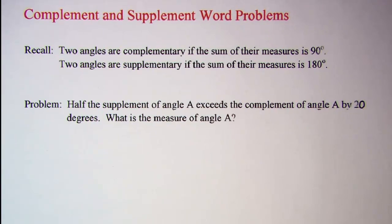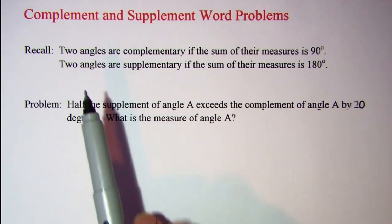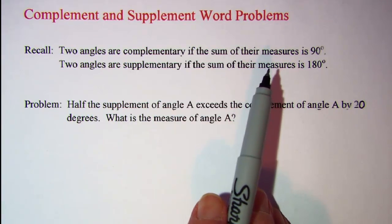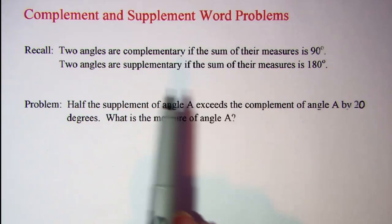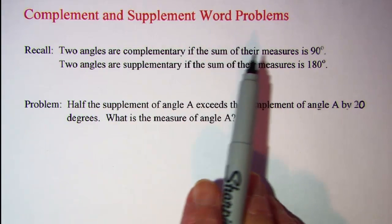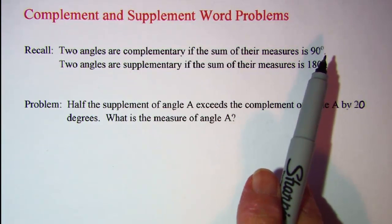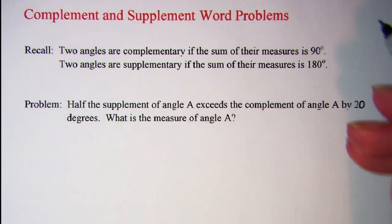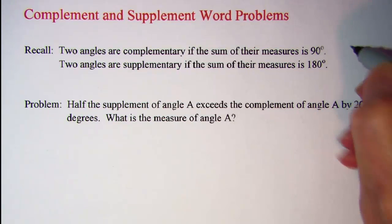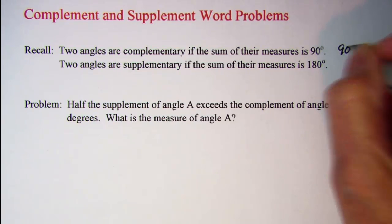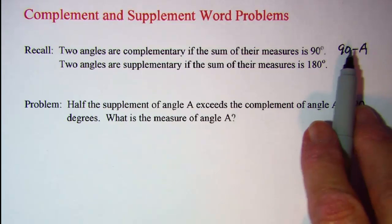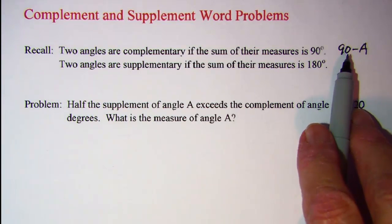In this video we'll be looking at a couple of complement and supplement word problems. Two angles are complementary if the sum of their measures is 90 degrees. This means that if I wish to translate the complement of an angle A, I would use 90 minus A, because if we know angle A's measure then we would subtract that from 90 to find the complement measure.